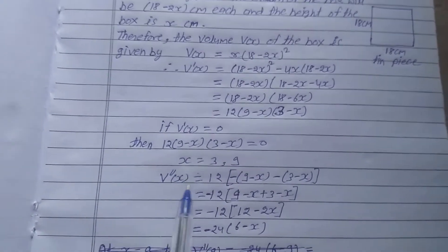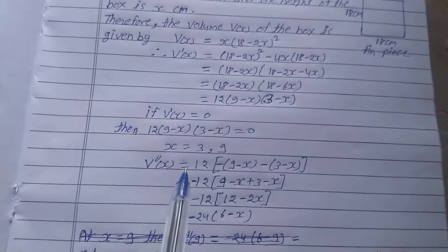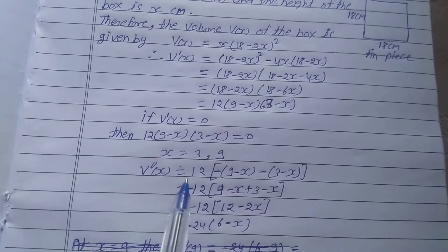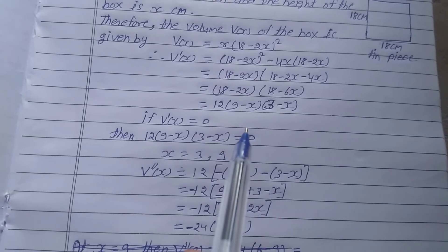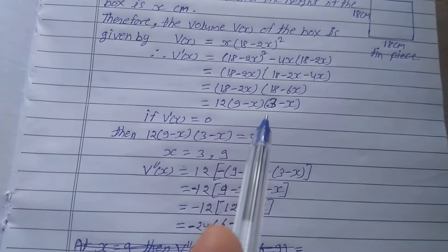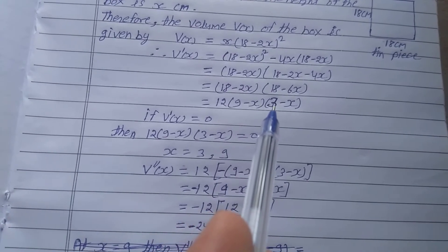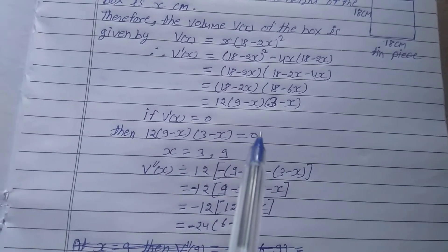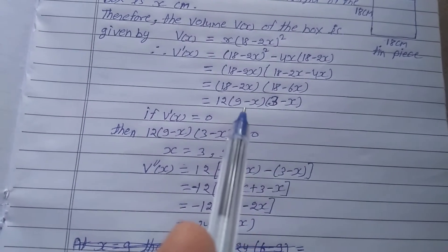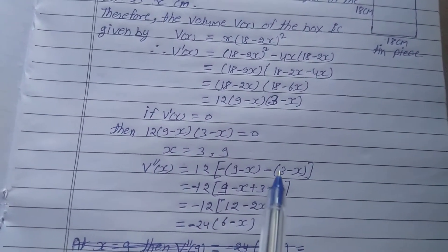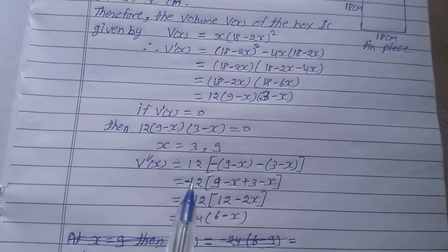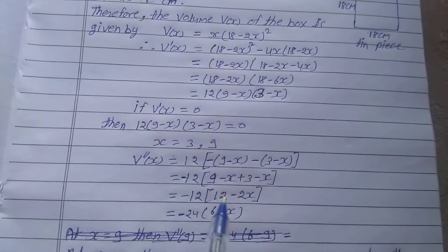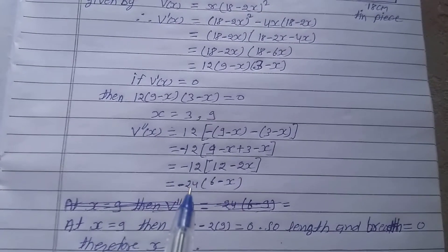To find the maximum value condition, differentiate V'(x) again to get V''(x). Using the product rule with constant 12: taking 9 minus x constant, the derivative of (3 minus x) is minus 1, giving minus(9 minus x); and taking (3 minus x) constant, the derivative of (9 minus x) is minus 1, giving minus(3 minus x). Taking minus common: V''(x) = minus 12 times (9 minus x plus 3 minus x) = minus 12 times (12 minus 2x), and taking 2 common gives V''(x) = minus 24 times (6 minus x).